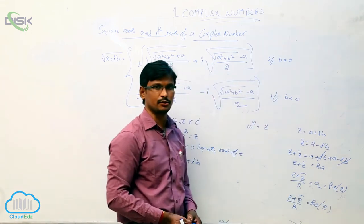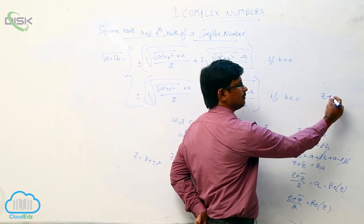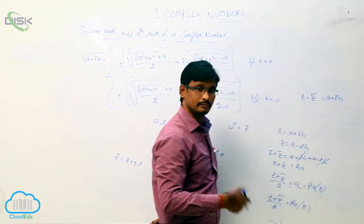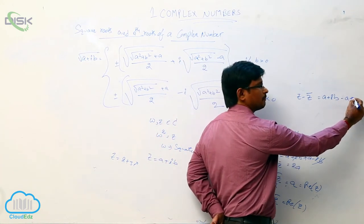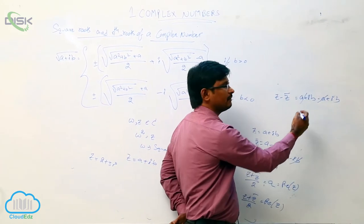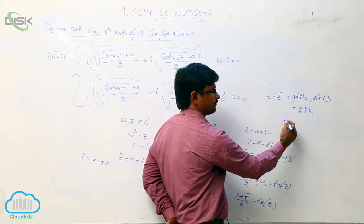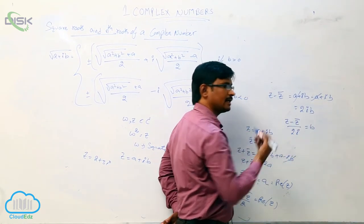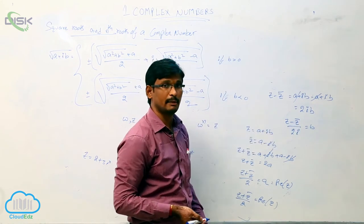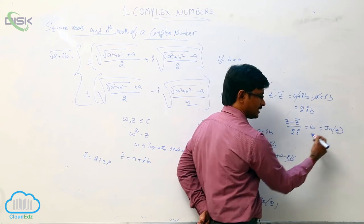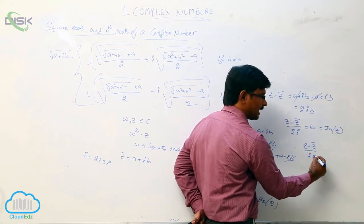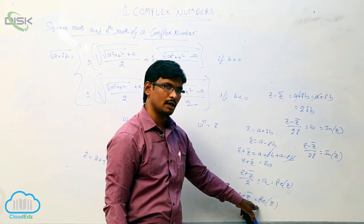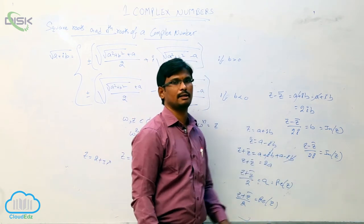Now if we subtract: Z minus Z̄ equals A plus iB minus (A minus iB), and the real parts cancel, giving 2iB. So Z minus Z̄ by 2i equals B, which is the imaginary part of Z. Therefore: Z plus Z̄ by 2 equals the real part of Z, and Z minus Z̄ by 2i equals the imaginary part of Z.